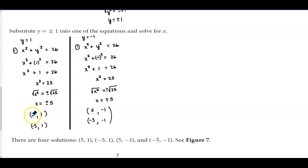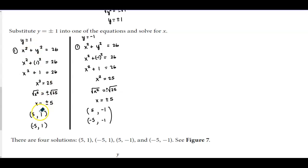That means we get two ordered pairs: we have x = +5 and x = −5 when y = 1, giving ordered pairs (5, 1) and (−5, 1).